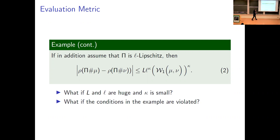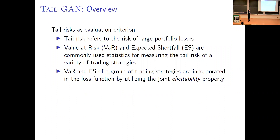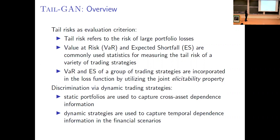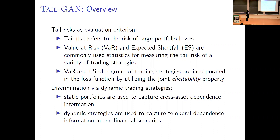On a high level, in our TailGAN design we use Value at Risk, Expected Shortfall, and other tail risk measures as guidelines in the loss function to design the training process. A group of benchmark trading strategies are incorporated in the loss function through the notion of elicitability. We also use dynamic trading strategies in the discriminator to provide non-linear cuts in high dimensions to better separate the true and generated data distributions.